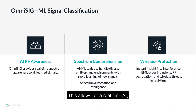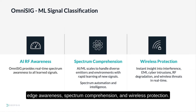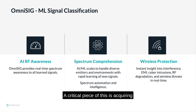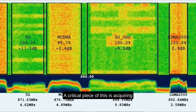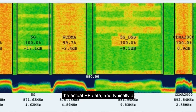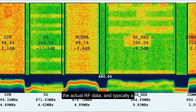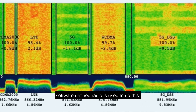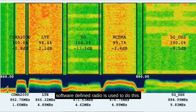This allows for real-time AI edge awareness, spectrum comprehension, and wireless protection. A critical piece of this is acquiring the actual RF data, and typically a software-defined radio is used to do this.